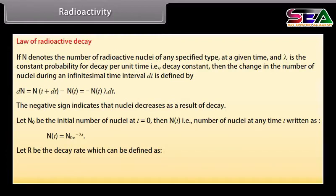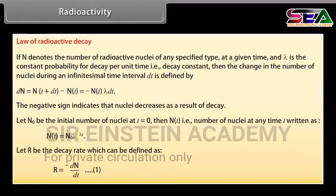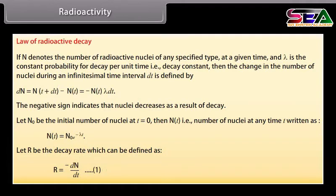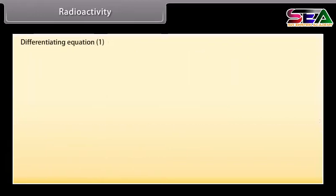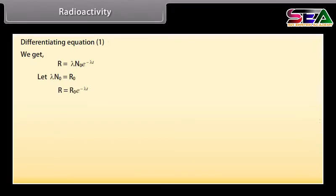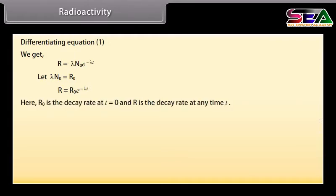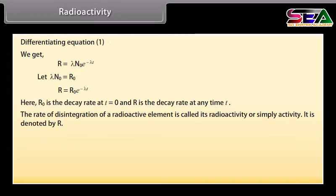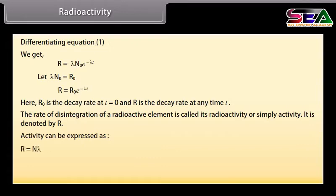Let R be the decay rate, defined as R = −dN/dt. Differentiating, we get R = λ·N₀·e^(−λt). Setting λ·N₀ = R₀, we have R = R₀·e^(−λt), where R₀ is the decay rate at t = 0 and R is the decay rate at any time t. The rate of disintegration of a radioactive element is called its radioactivity or activity, denoted by R, and can be expressed as R = Nλ.